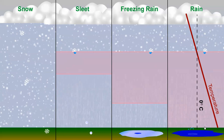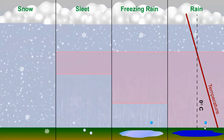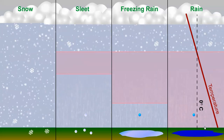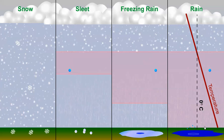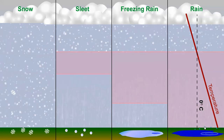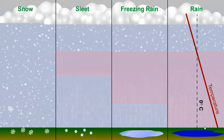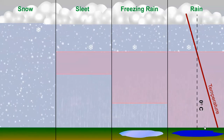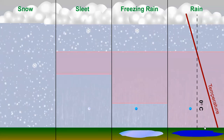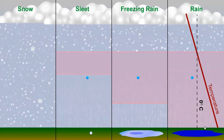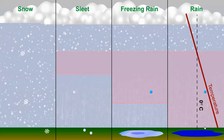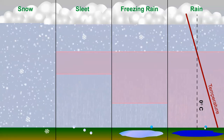That seems simple enough, but sometimes in the atmosphere, a warm air sandwich of sorts develops. In other words, there can be a layer of very cold air near the ground, a slab of warm air a few thousand feet aloft, and cold air above the warm slab. When a warm air sandwich develops, that's when sleet and freezing rain enter the picture.